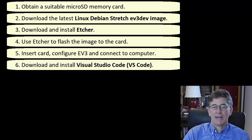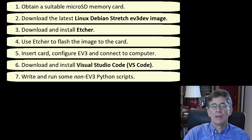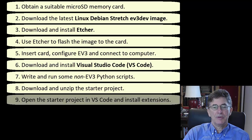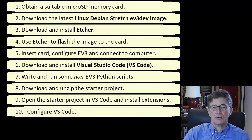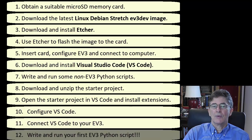Download and install Microsoft Visual Studio Code, or VS Code. This is a free multi-platform code editor compatible with Windows, Mac OS, and Linux. Write and run some non-EV3 Python scripts. Download and unzip the starter project. Open VS Code, open the starter project folder, and install two extensions. Configure VS Code, connect VS Code to your EV3, and then write and run your first EV3 Python script.